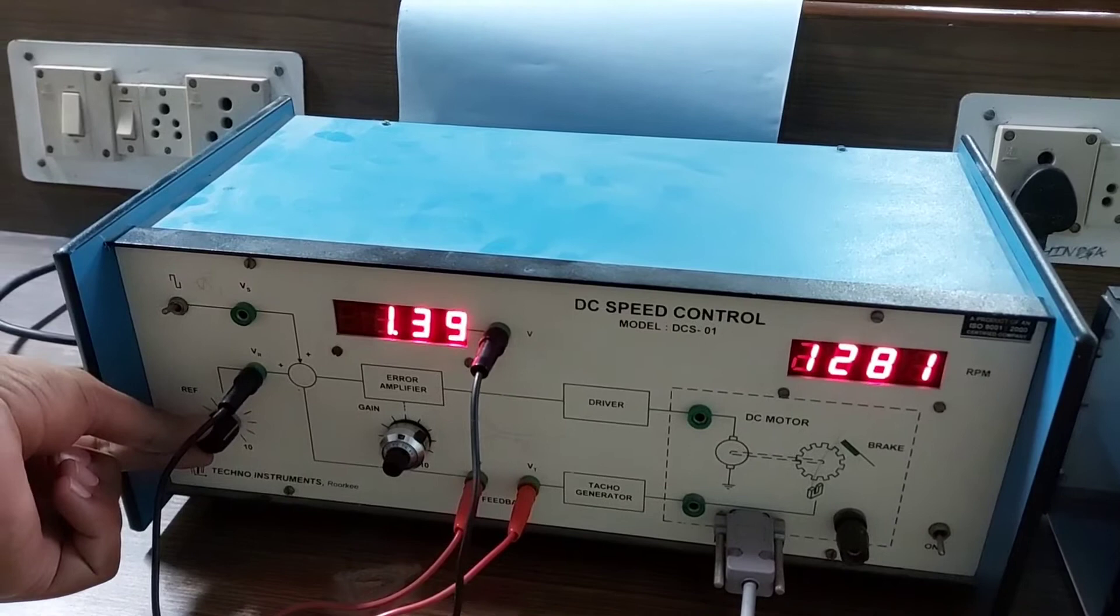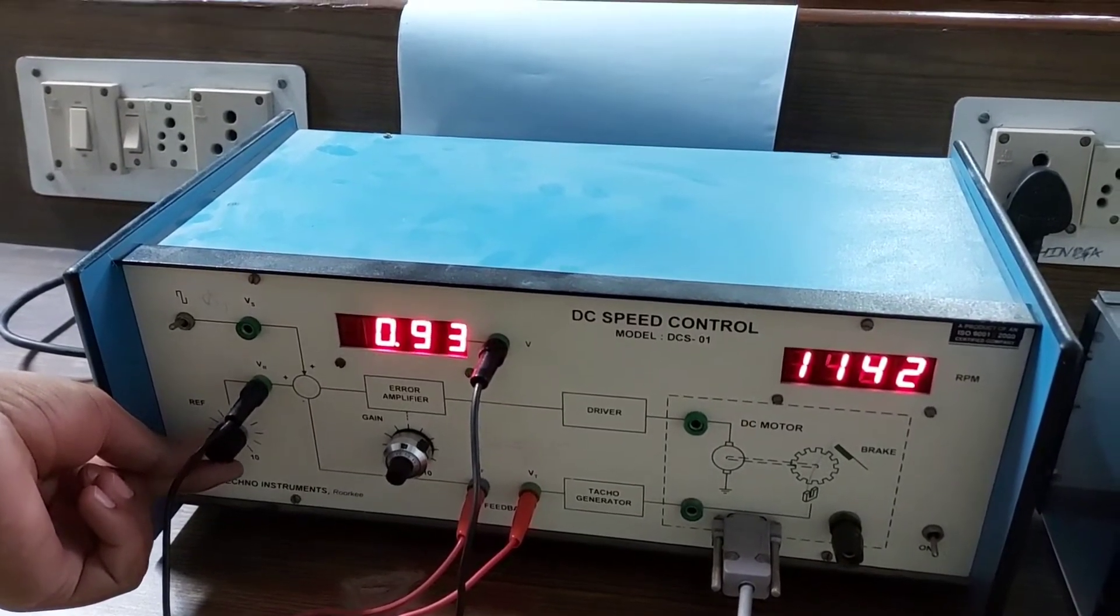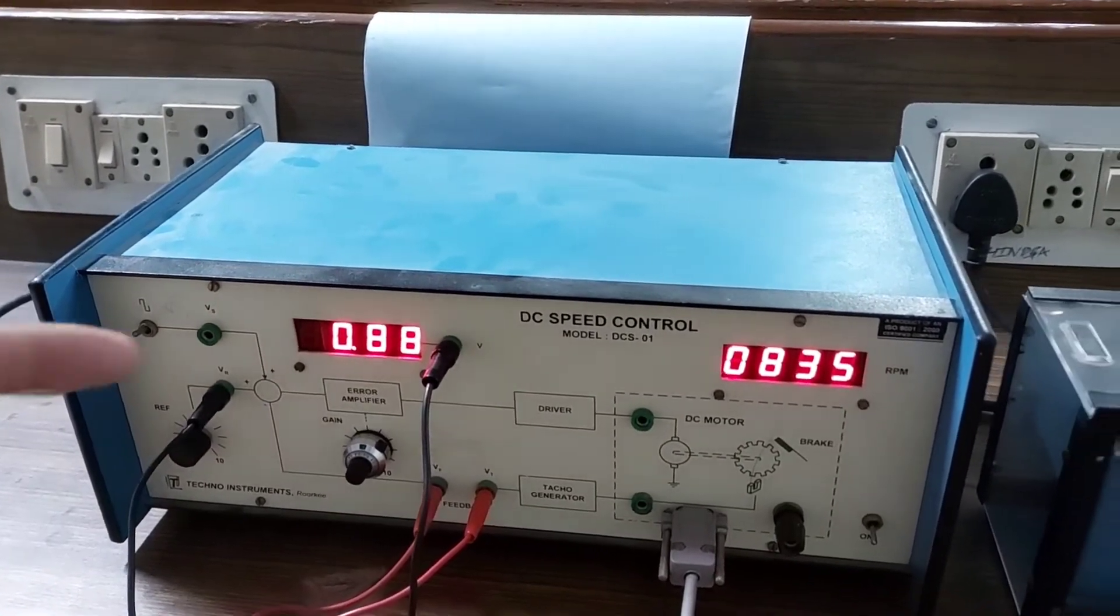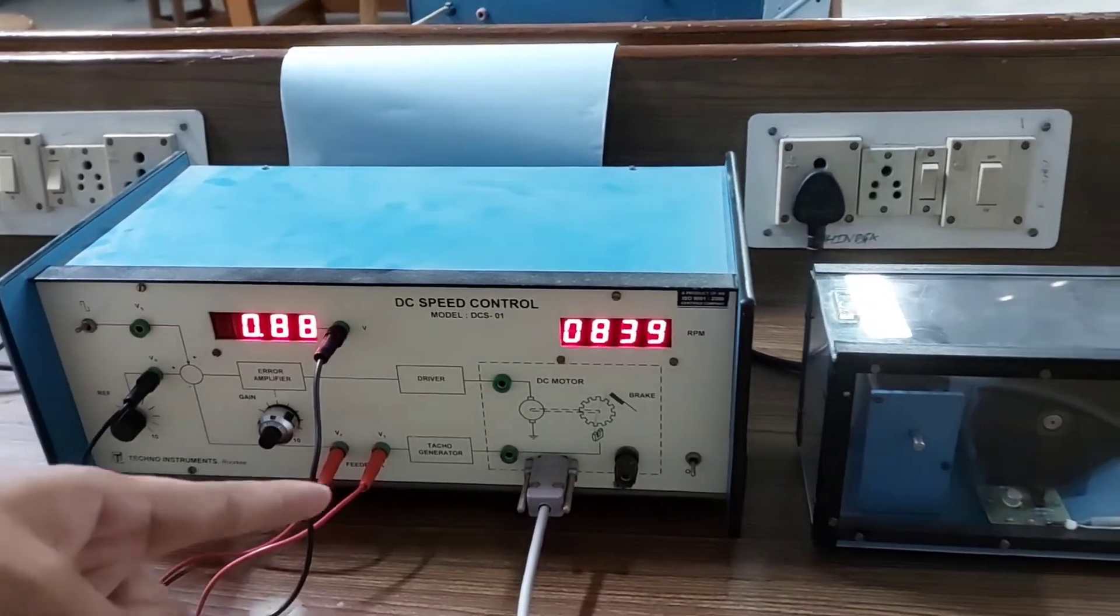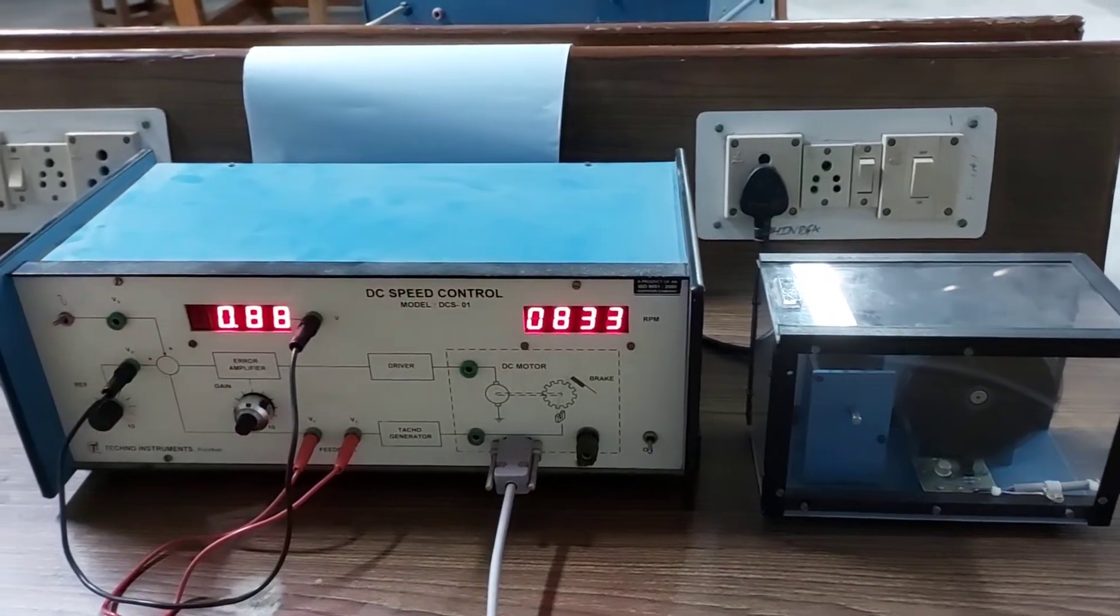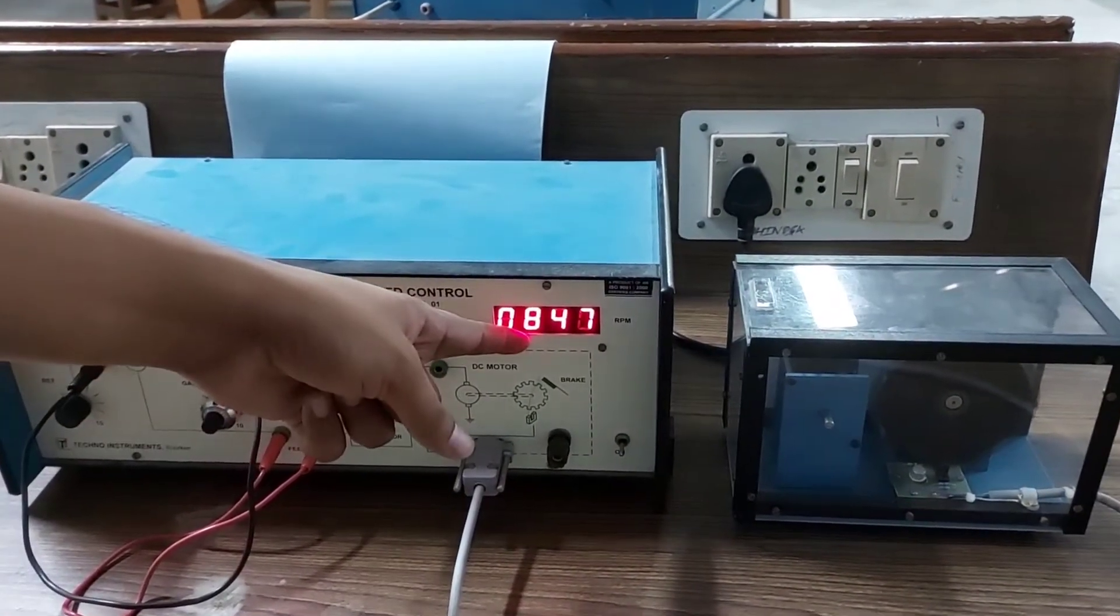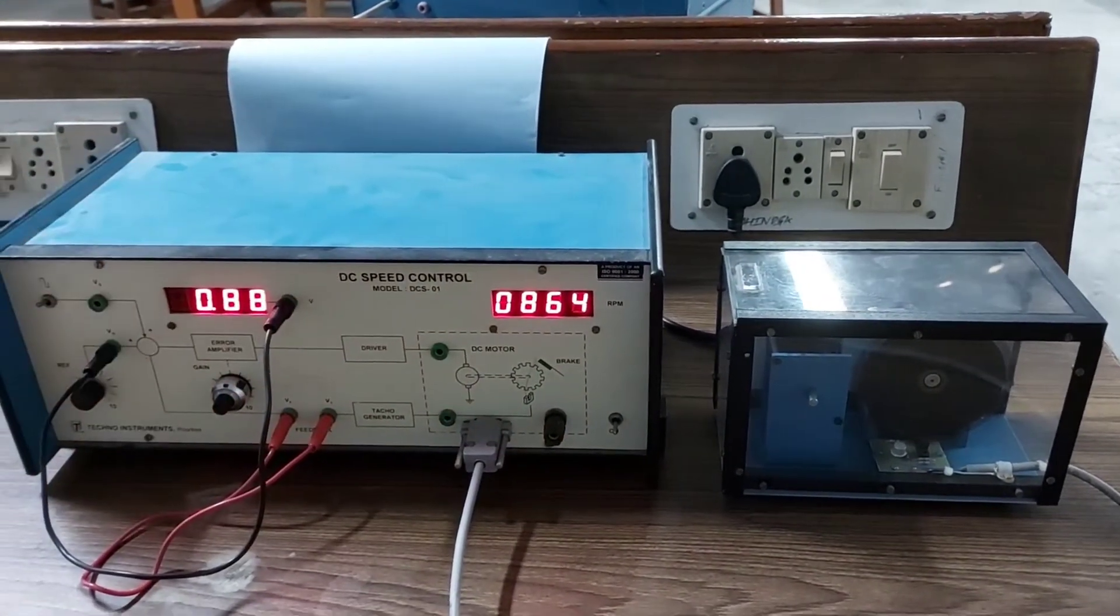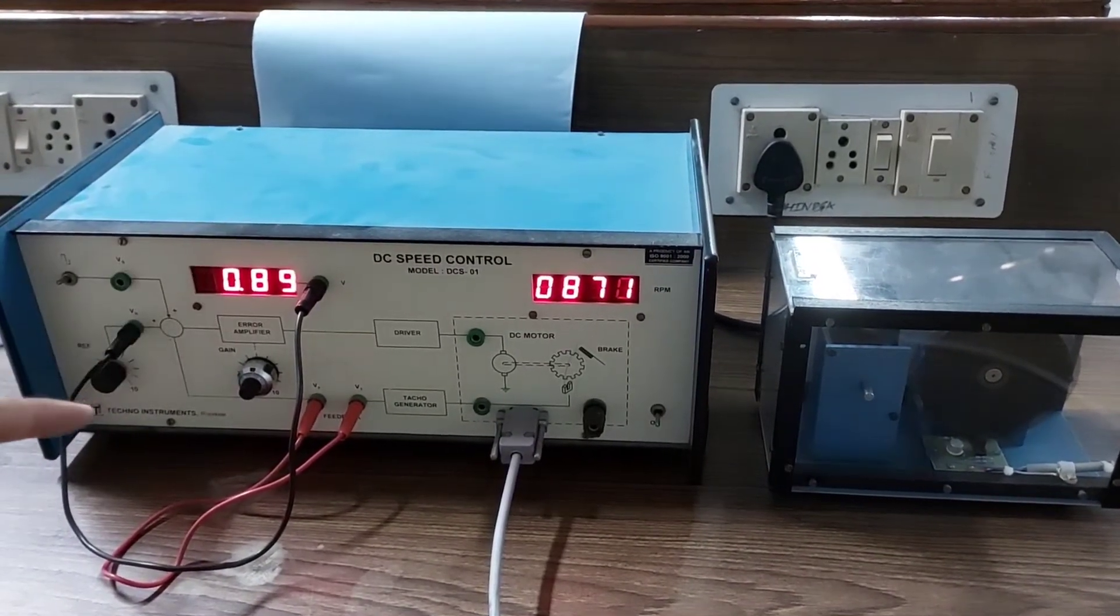to 0.88 volts, then the corresponding RPM is 860. The control unit controls that motor according to this reference voltage to an RPM of 867 from the 1247 noted earlier. With the help of this unit we can measure or control the RPM.